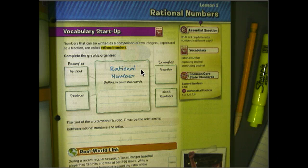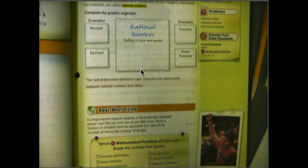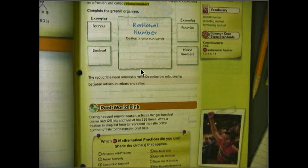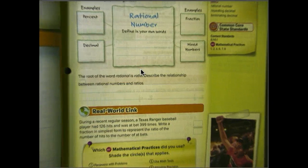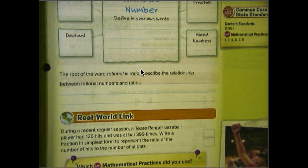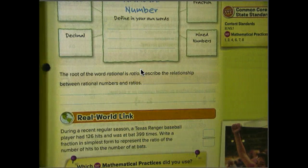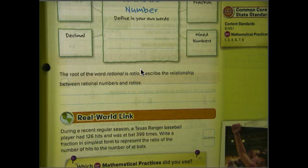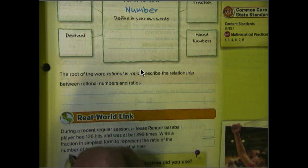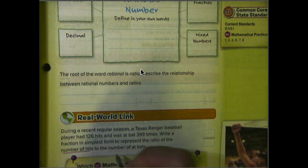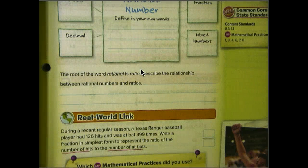Down at the bottom, it says during a recent regular season. Now, remember, you need your book. You may not be able to see what's on mine. Depends if I get it zoomed in well enough for you. During a recent regular season, a Texas Ranger baseball player had 126 hits and was at bat 399 times. Write a fraction in simplest form to represent the ratio of the number of hits to the number of at bats.